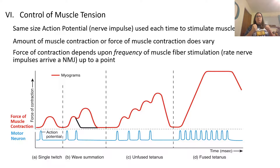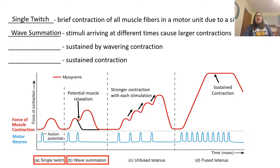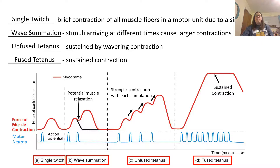A brief contraction of all muscle fibers in a motor unit due to a single action potential is known as a single twitch — one signal, one action potential, one single twitch. When stimuli arrive at different times causing longer contractions, this is called wave summation, where the contractions add up and get bigger. A sustained contraction that is still wavering is known as unfused tetanus — it's building but not constant. When the contraction is fully sustained and constant, that is fused tetanus, caused by nerve signals sent very rapidly over and over, producing a fused, constant contraction.